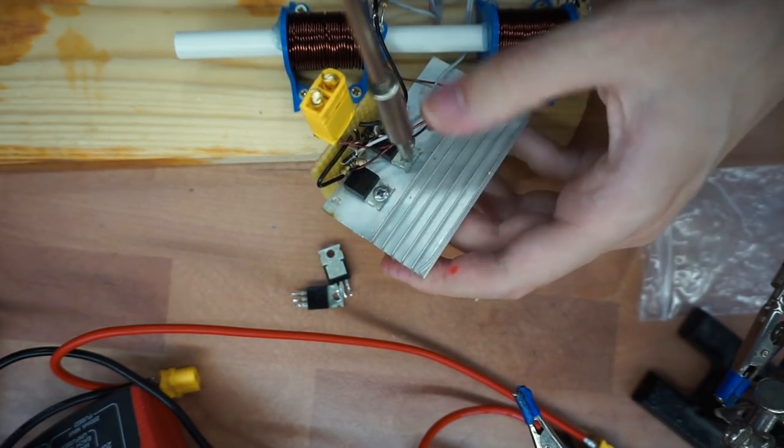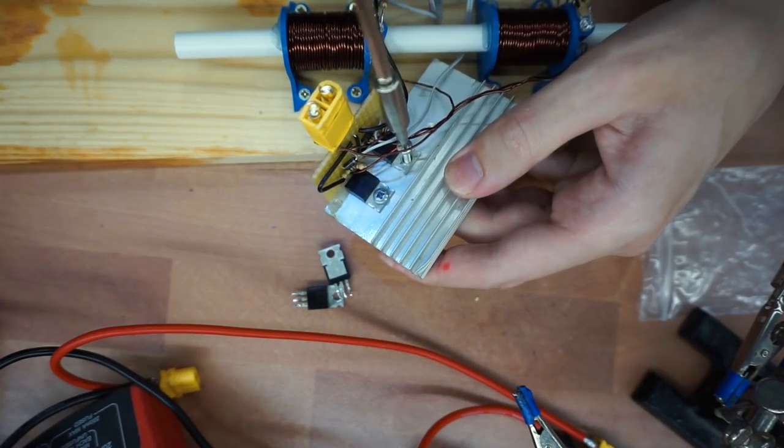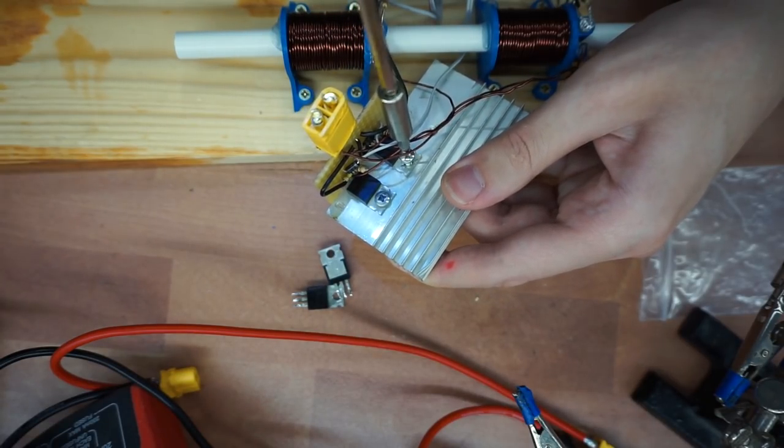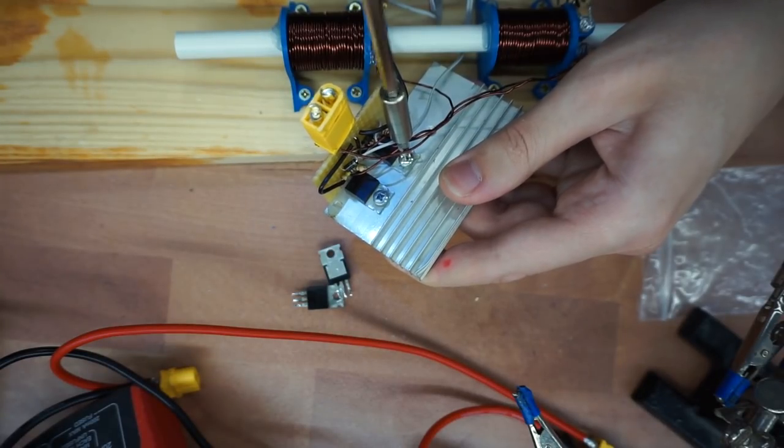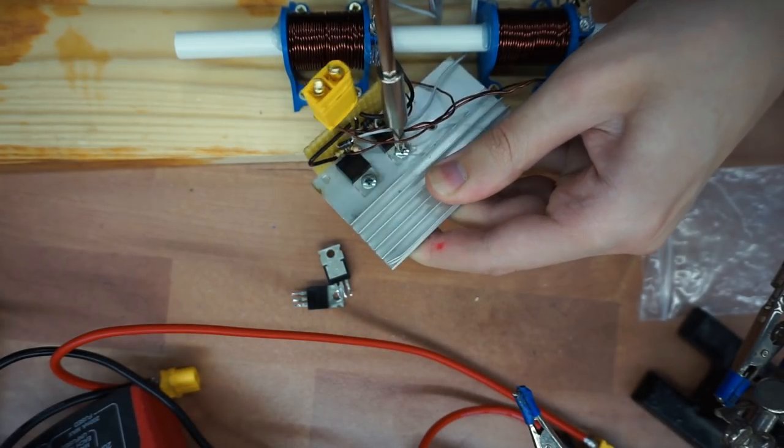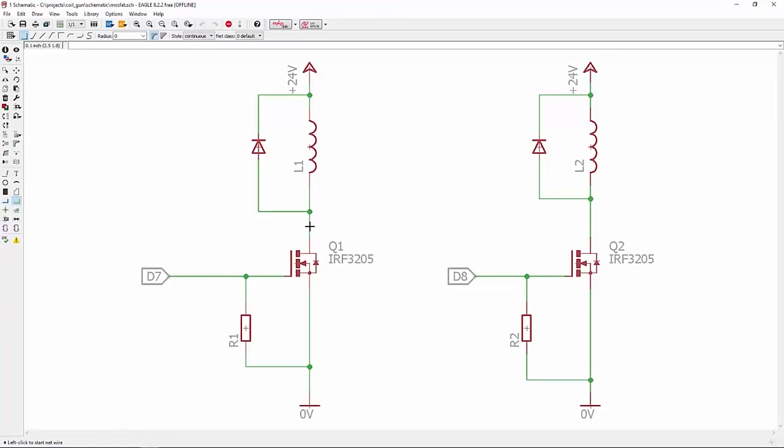But in the end, I actually found out that the problem was the heatsink. Because actually, the MOSFETs, the back side of them, is connected to the drain. And since they are connected with the same heatsink, their drains were connected together. So I was always turning on both coils at once. I couldn't switch them separately.